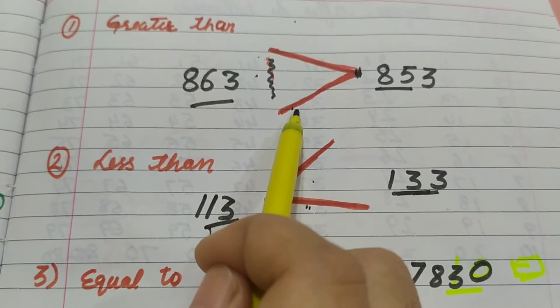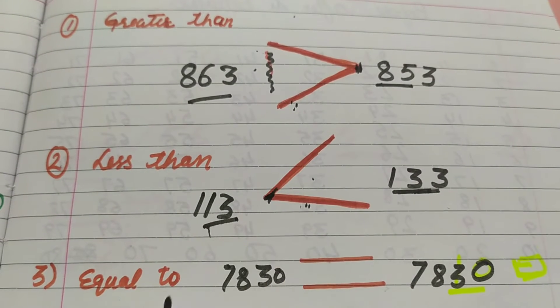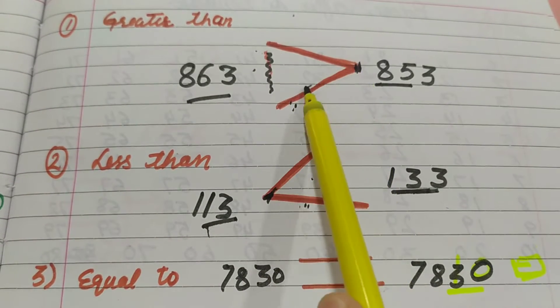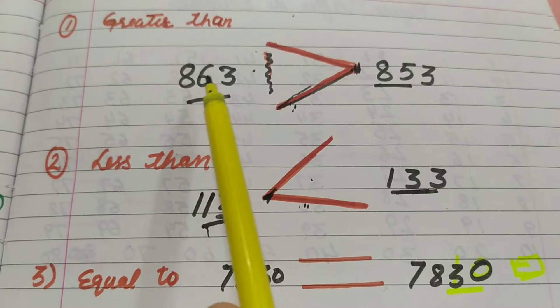This is greater than sign, less than sign and two parallel lines means equal to sign. Suppose this is alligator's mouth and alligator will always eat greater number.